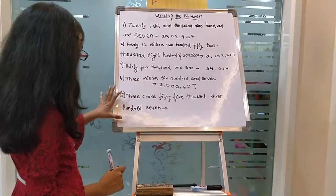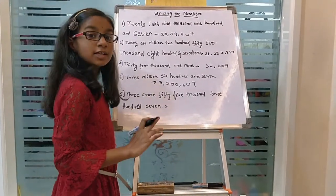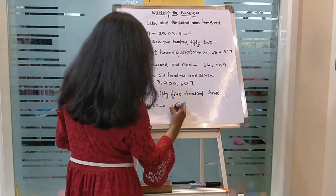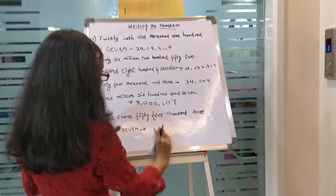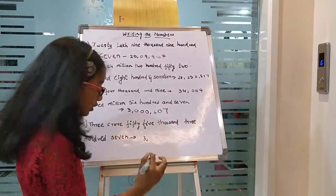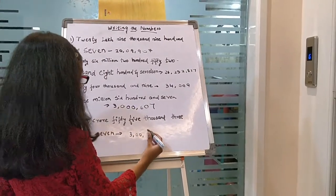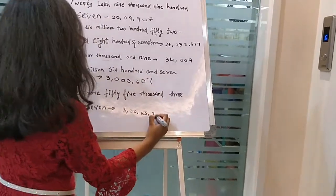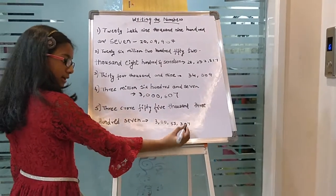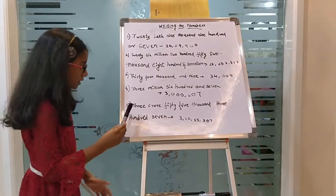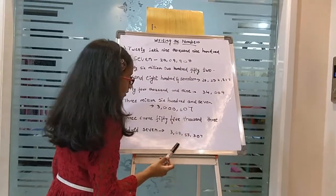So now let's go to this one. 3 crore - if there is crore, it must be in the Indian system. 55,000, but there is nothing in the lakhs, so we need to keep two zeros - because lakhs and 10 lakhs. Next, 55,307. There is nothing in the tenth place, so I kept zero here. So we helped 3 crore 55,307 find its number.